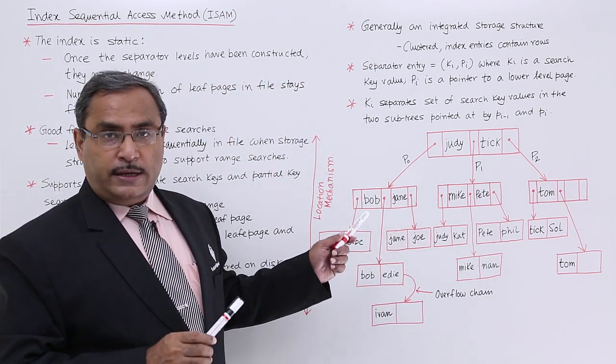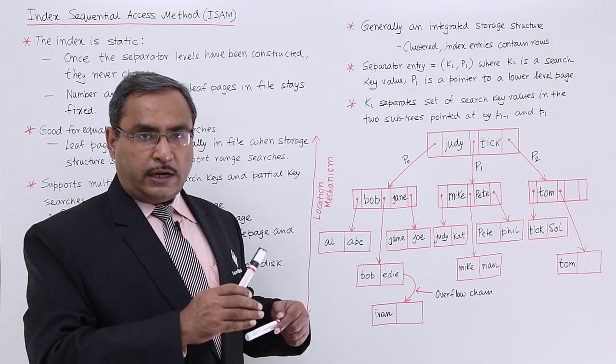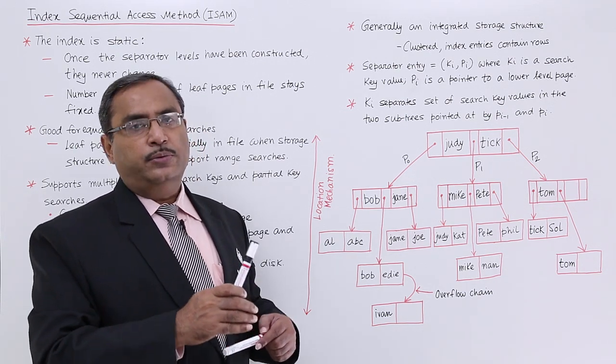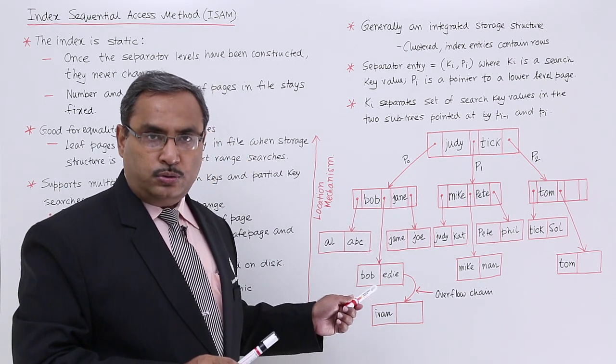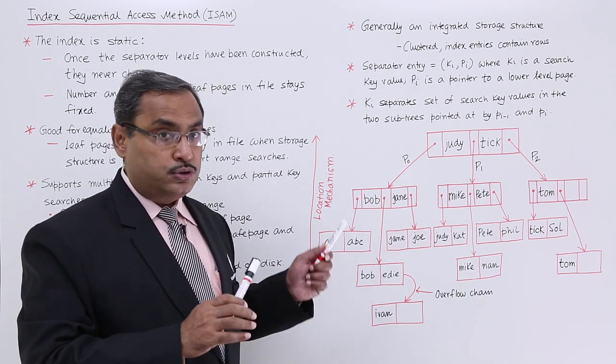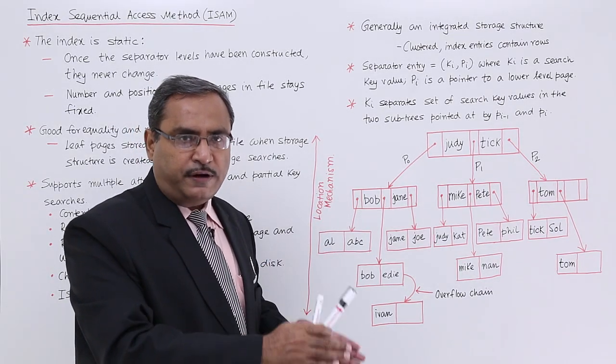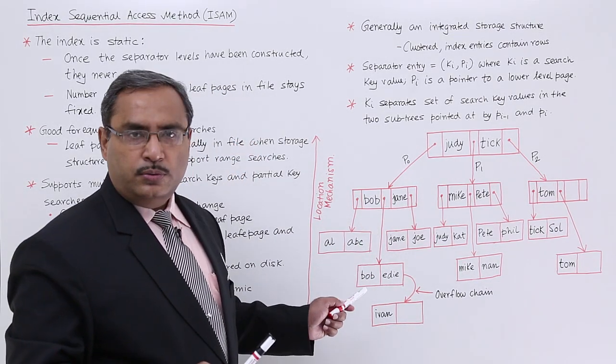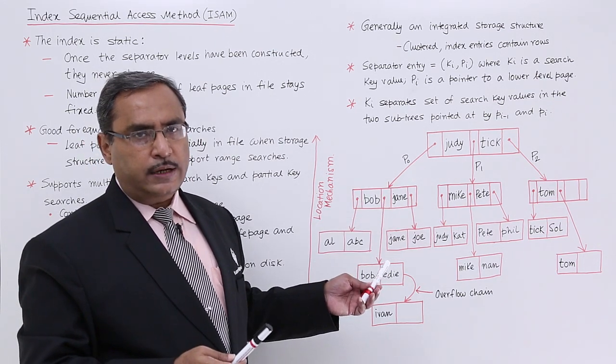This particular data structure ISAM is suitable for equality and range searches accordingly. That means, if I want to get only those people name which are ranging from starting with the name E to starting with the name F, in this way we can easily go to those fields and those names ranging within that specified limits. In this way the range searches can be done and obviously, equality searches can easily be done here.